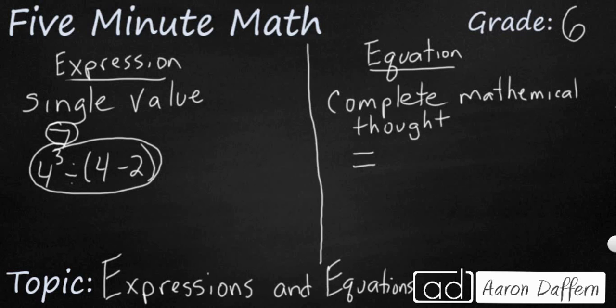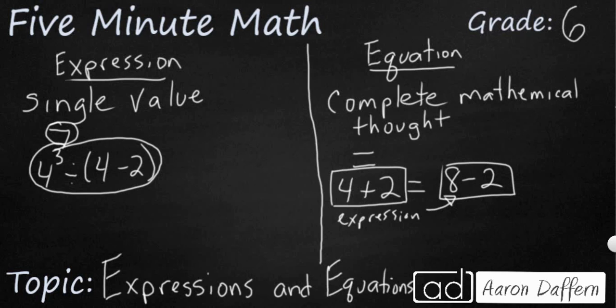So really, an equation is two expressions with an equal sign. So for an example, one equation might be 4 plus 2 equals 8 minus 2. Now you see, your equation is made up of two expressions. Here's an expression, 4 plus 2, and this also is an expression, 8 minus 2. And it is an equation because of this equal sign because these two are balanced.